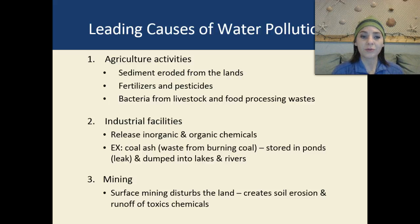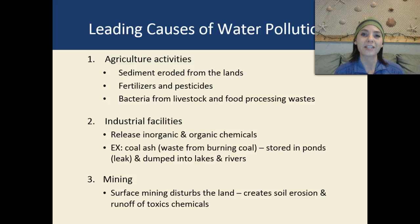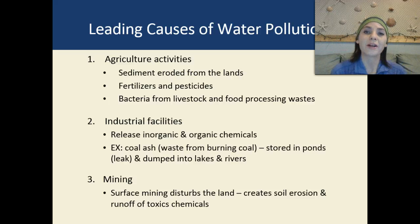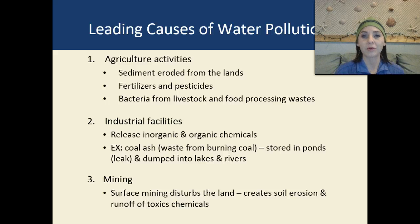The second type of water pollution source is industrial facilities, which release inorganic as well as organic chemicals into the water — for example, coal ash that gets stored in ponds and eventually gets dumped into our lakes and rivers, and eventually winds up in our oceans. A third type is mining: surface mining disrupts the land, creates soil erosion, and we have runoff of toxic chemicals left over from mining wastes.